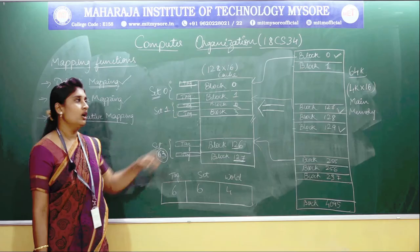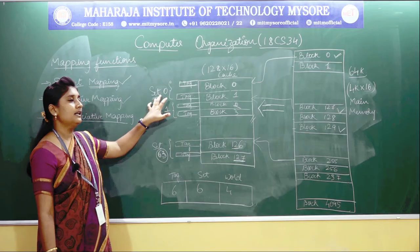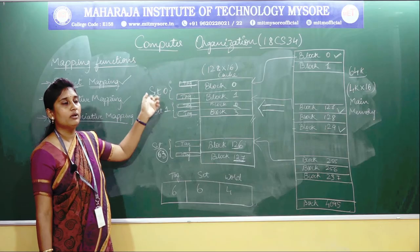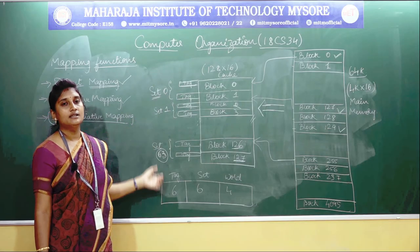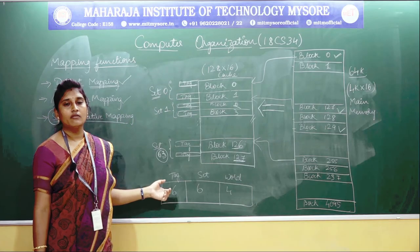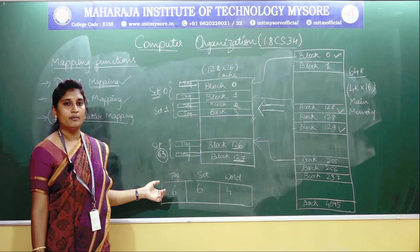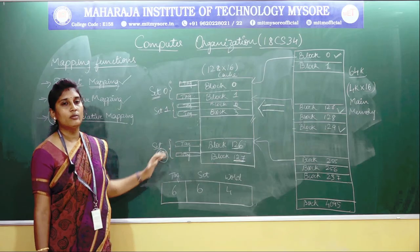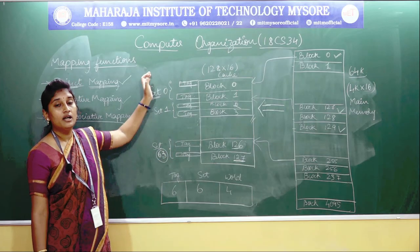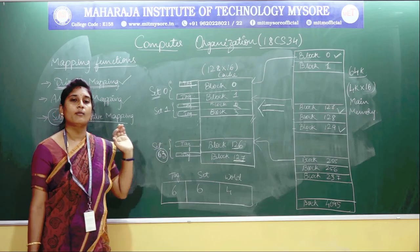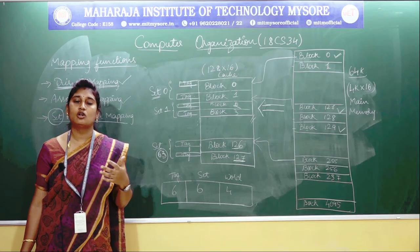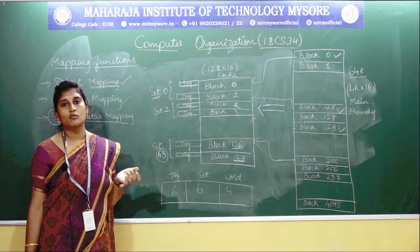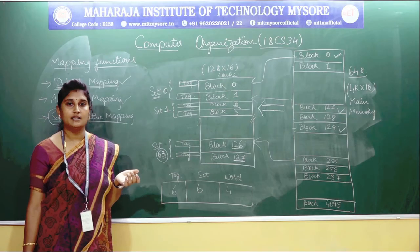In set associative mapping technique, the group of tags will be made into a set, and each set will be given a number. Instead of searching all the tags, you will be searching the sets. The number of searches also got reduced and the access time got increased.